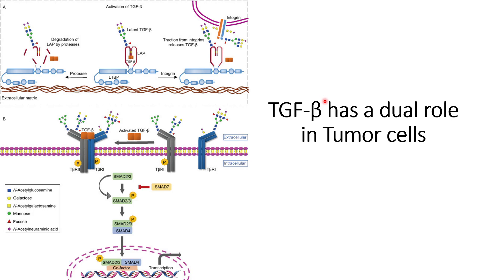During the early stage of tumor cell initiation, the role of TGF-beta is to inhibit tumor cell progression and trigger apoptosis of those cells.